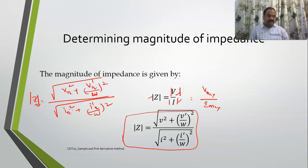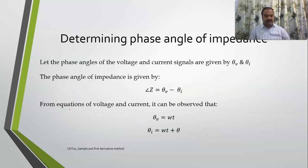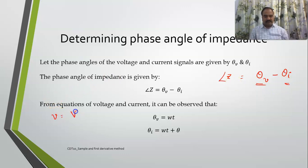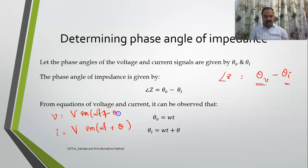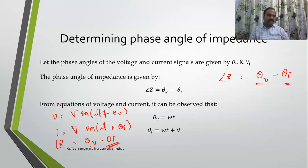We need to apply numerical methods to determine the derivatives. Before that, how do we determine the phase angle? The impedance will have a phase angle — it is the angle of voltage minus the angle of current. If v = V·sin(ωt + θv) and i = I·sin(ωt + θi), then angle of Z is θv minus θi.